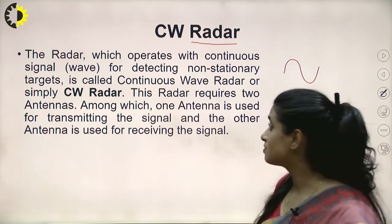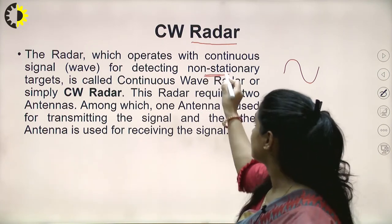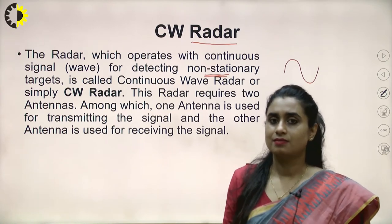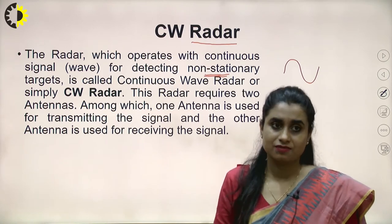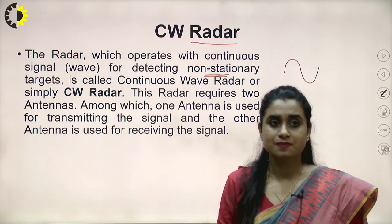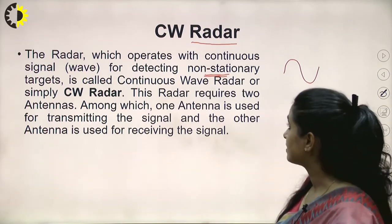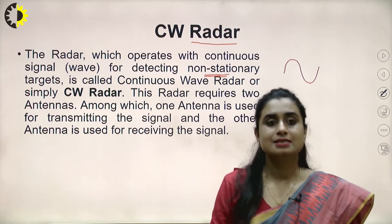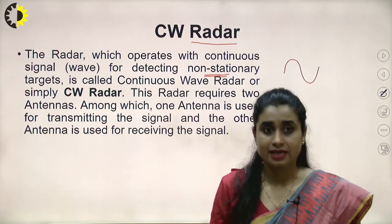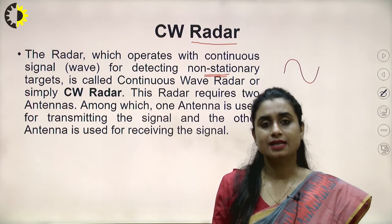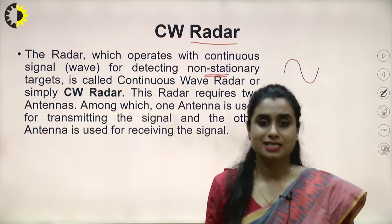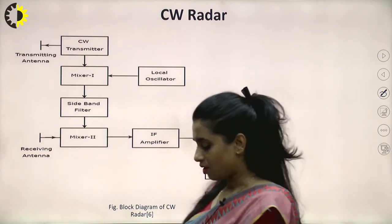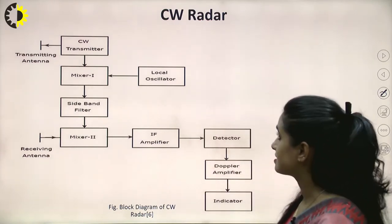CW radar operates with a continuous signal for detecting non-stationary targets. It uses the Doppler shift phenomenon for detection and is called continuous wave radar or simply CW radar. This radar requires two antennas - one for transmission and another specifically for reception. This is the block diagram of the radar system.